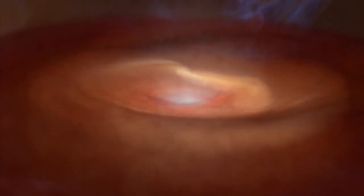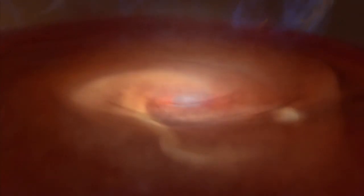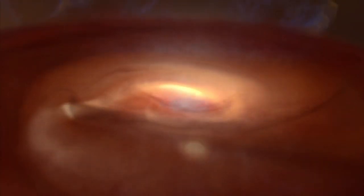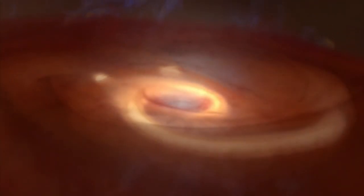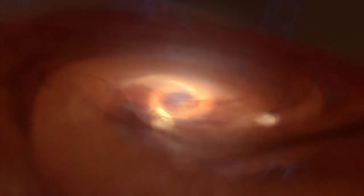In this computer model, the disk continues to accumulate gas and dust from its surroundings for thousands of years. Eventually, the disk fragments, producing dense, bright structures. These may become sites where giant planets form.